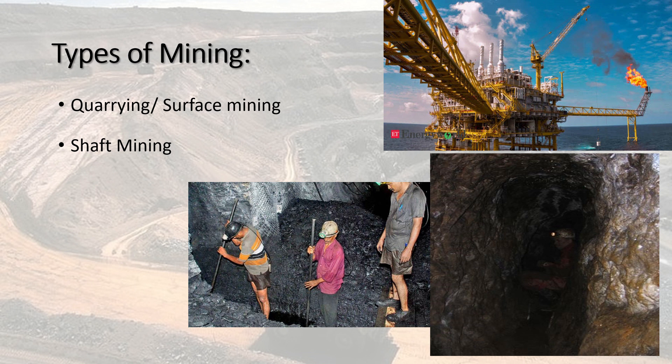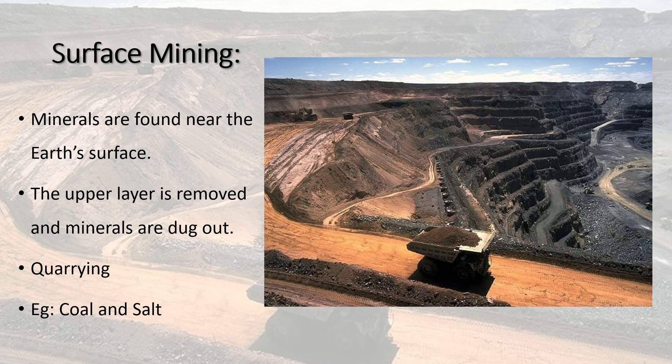Some mining is done by just scraping away the soil or dirt from the top of the ground. When we remove vegetation, dirt, bedrock, and other layers of earth on the surface to reach ore deposits like coal and salt, that is called surface mining. This process is called cladding. As you can see in the picture, it's all on the surface and easily extracted.